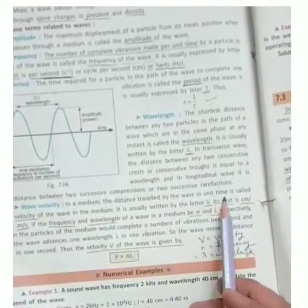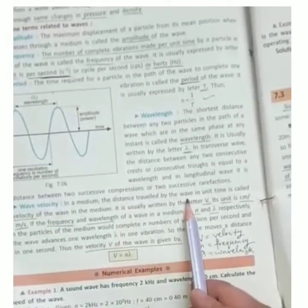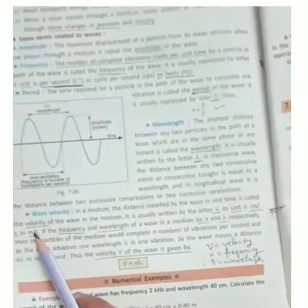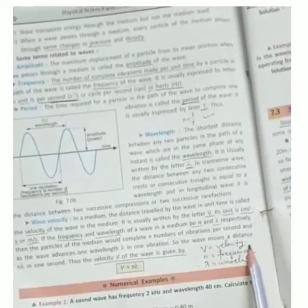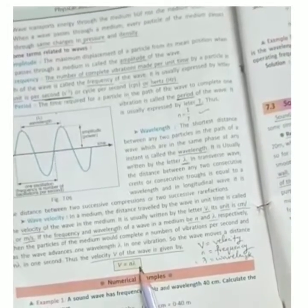Now we can see the wave velocity. In a medium, distance traveled by the wave in unit time is called the velocity. You can see this formula: V is equal to n lambda. If V is my velocity, n is frequency, and lambda is my wavelength, V is the product of frequency and wavelength.